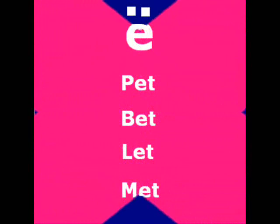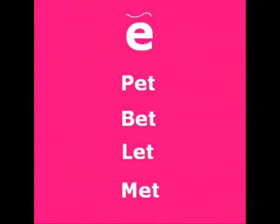Next is the symbol for the sound in pet, bet, let, met, and many more. It means in all words where your dictionary shows this symbol, the sound would be 'E' as in pet or bet.